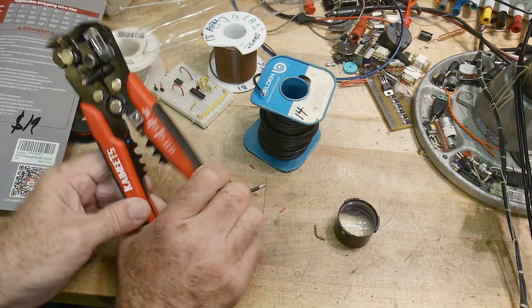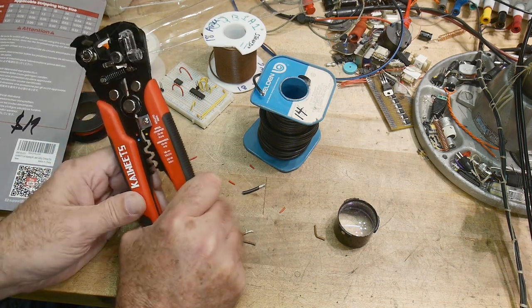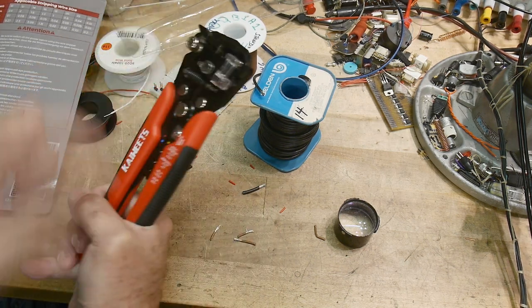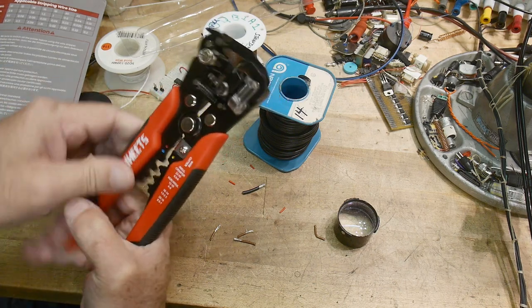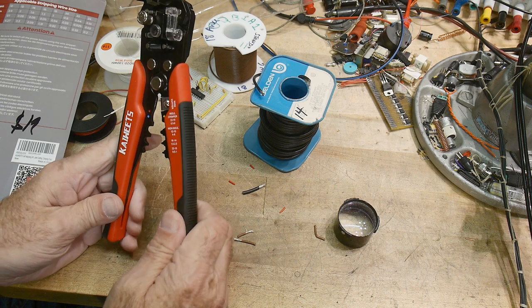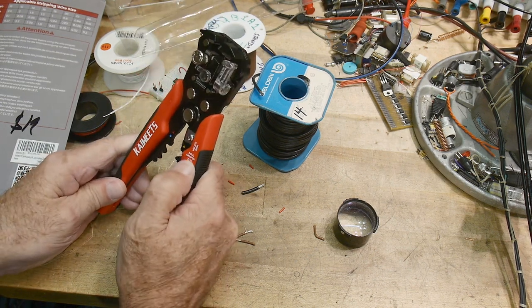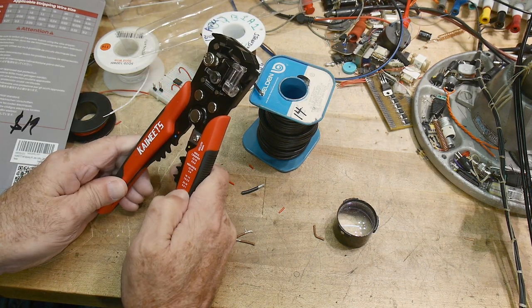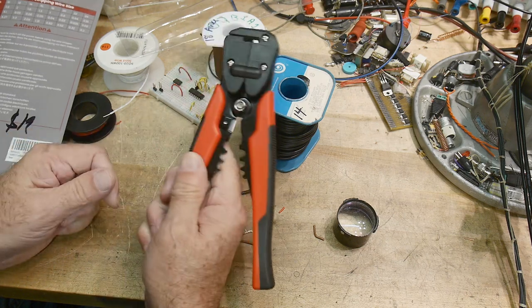But yeah, for 19 bucks, I don't think it can go wrong. They also got a little area here for crimping and stuff. That doesn't look all that useful to me because of the mechanical factor right there. I don't think it's enough. But as a wire stripper, yeah, I think it's pretty good. Yeah. Yeah. Well, there you go.